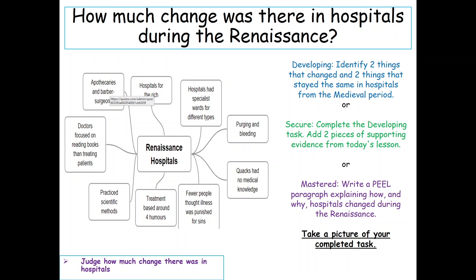For our final learning objective we need to be able to judge how much change there was in hospitals during the Renaissance. On screen now is a mind map containing information about Renaissance hospitals. Developing students, can you identify two things that changed and two things that stayed the same in hospitals from the medieval period. Secure students, can you complete the developing task first and then add two pieces of supporting evidence from today's lesson. Mastered students, can you write a PEEL paragraph explaining how and why hospitals changed during the Renaissance.